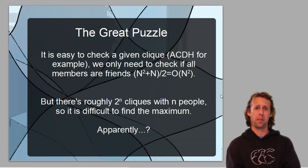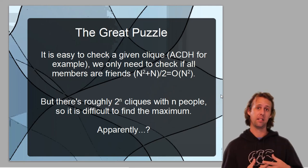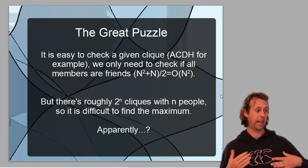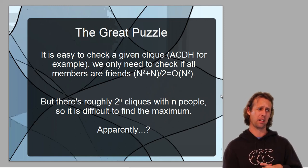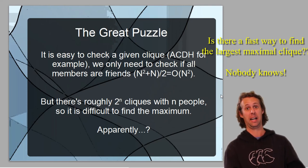This is the great puzzle, one of the biggest puzzles in all of mathematics and one of the Millennium Prize puzzles, is does P equal NP? It's easy to check if a suggested clique is indeed a legitimate clique, given a graph. We only need to check if all of the members are friends. But, given N different people, there's something like 2 to the power of N different possible cliques that could be the maximum. So the time of this problem here, finding the largest maximal clique, increases with the proportion of something like big O, 2 to the power N.